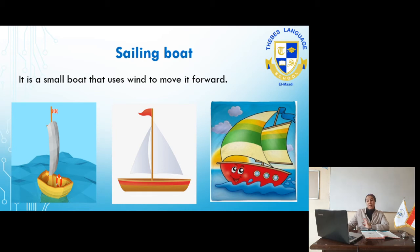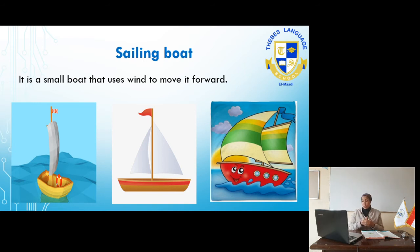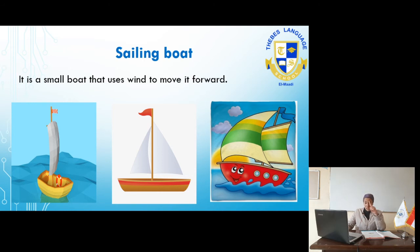We have here the sailing boat. These boats are very small and are used to move forward and backward. As we can see here, it has a big piece of cloth, and the wind moves it forward. This is the sailing boat, used mainly for sailing.